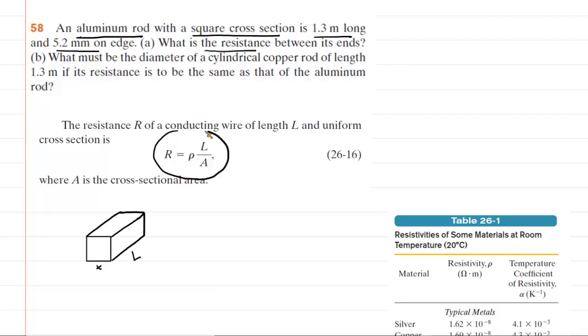Now, we have learned that the resistance of a conducting wire is equal to a constant, known as the resistivity, multiplied by the length and then divided by the cross-sectional area.